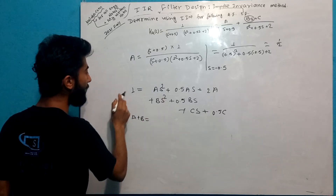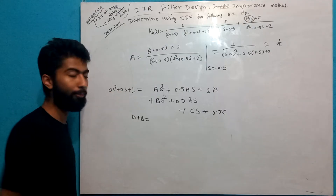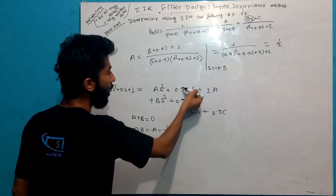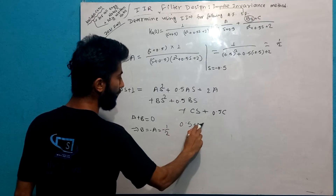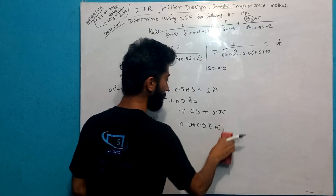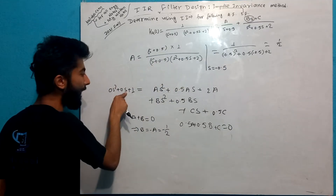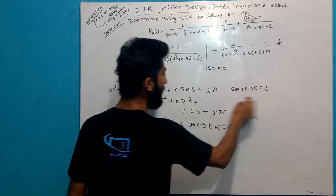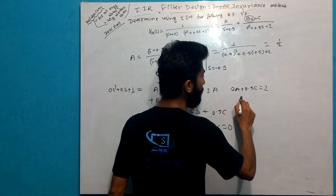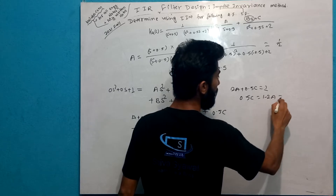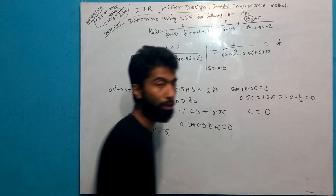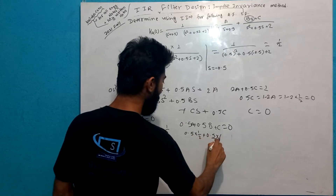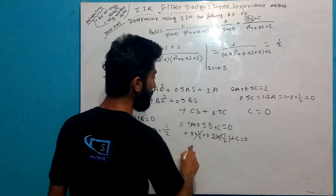It results in a loss of 0.5C. Now we have this term: 0.5 plus 0.5A plus B plus C equals 0.5 plus 0.5 plus C equals 1. This term with 0.5 plus C equals 0. So C equals 0.